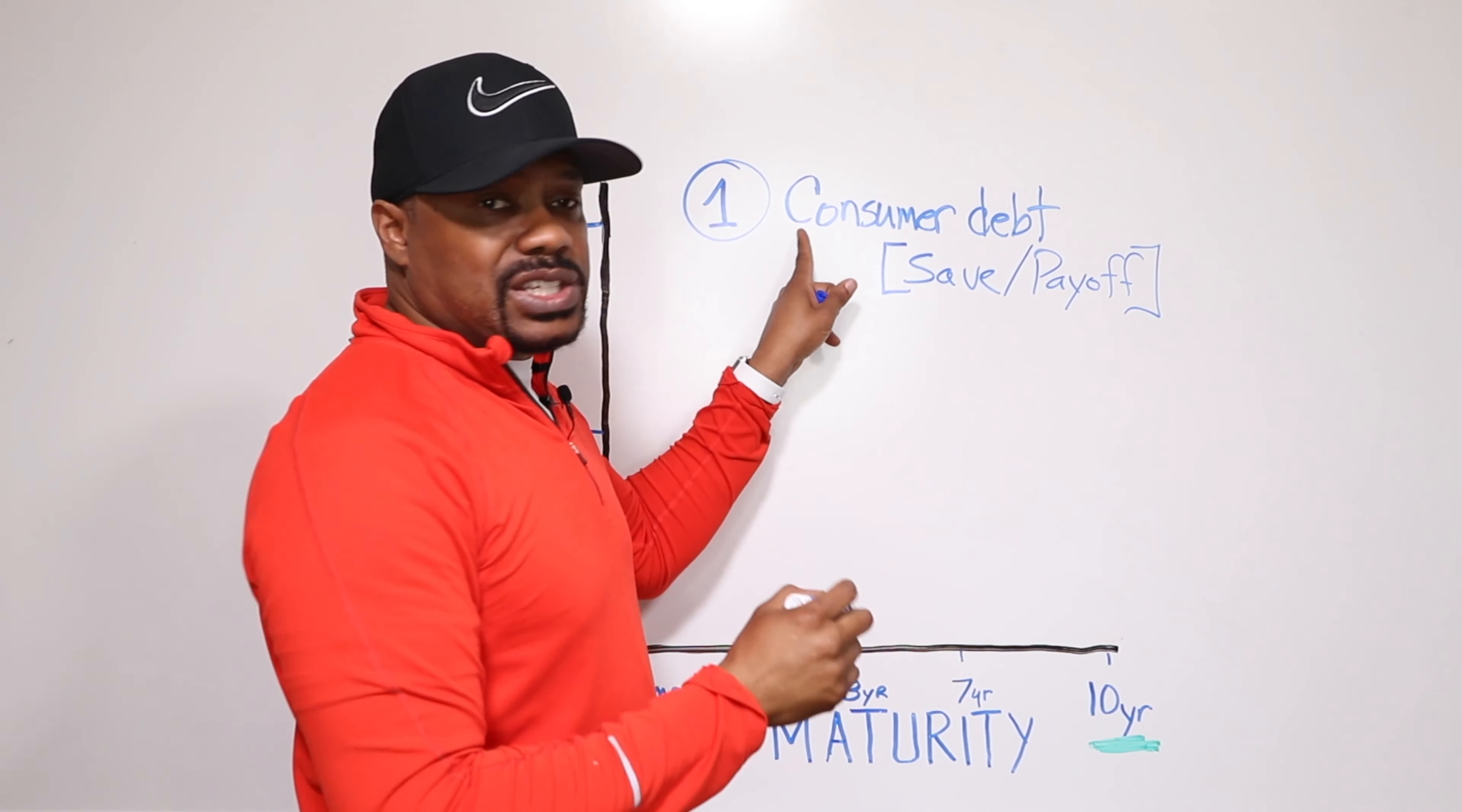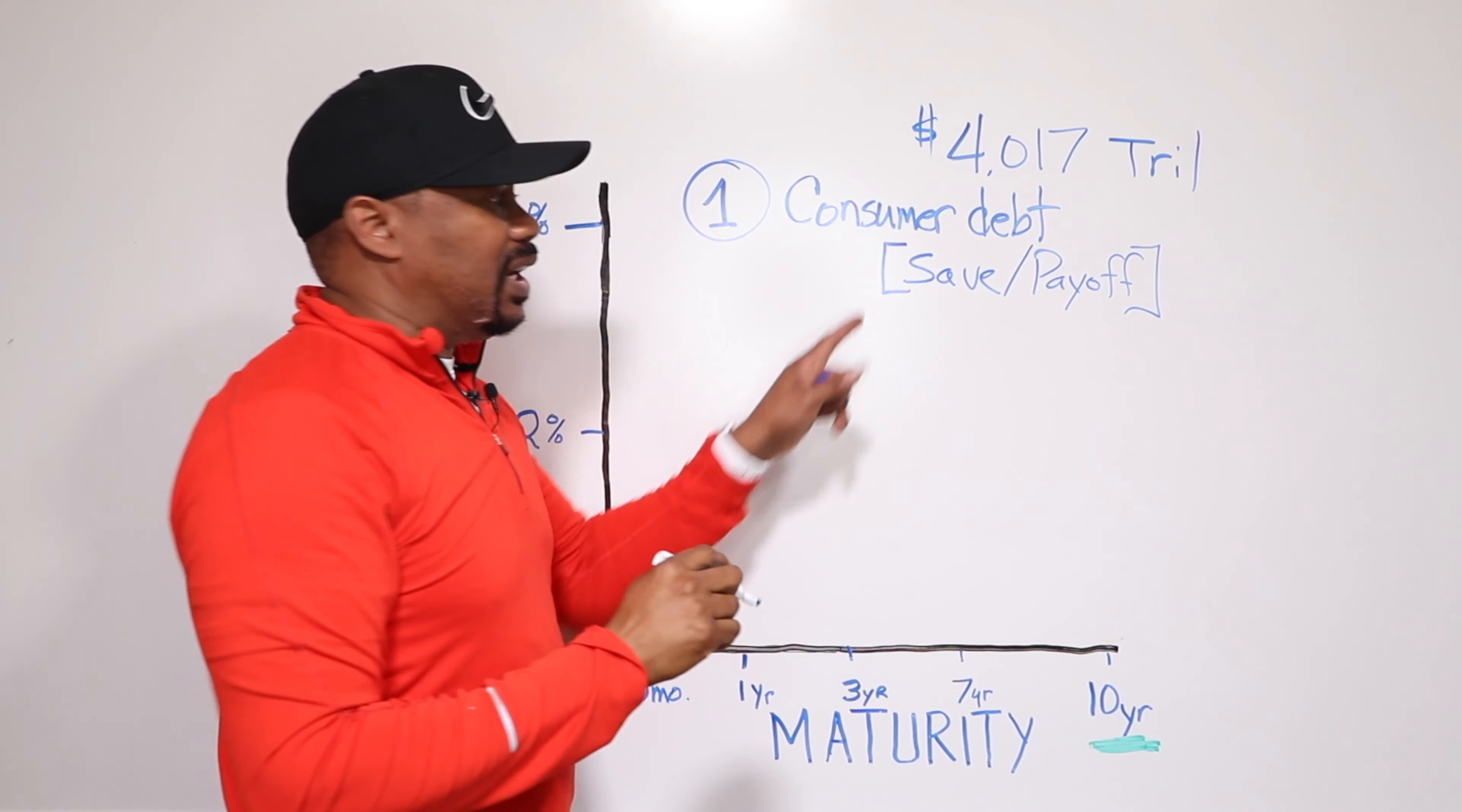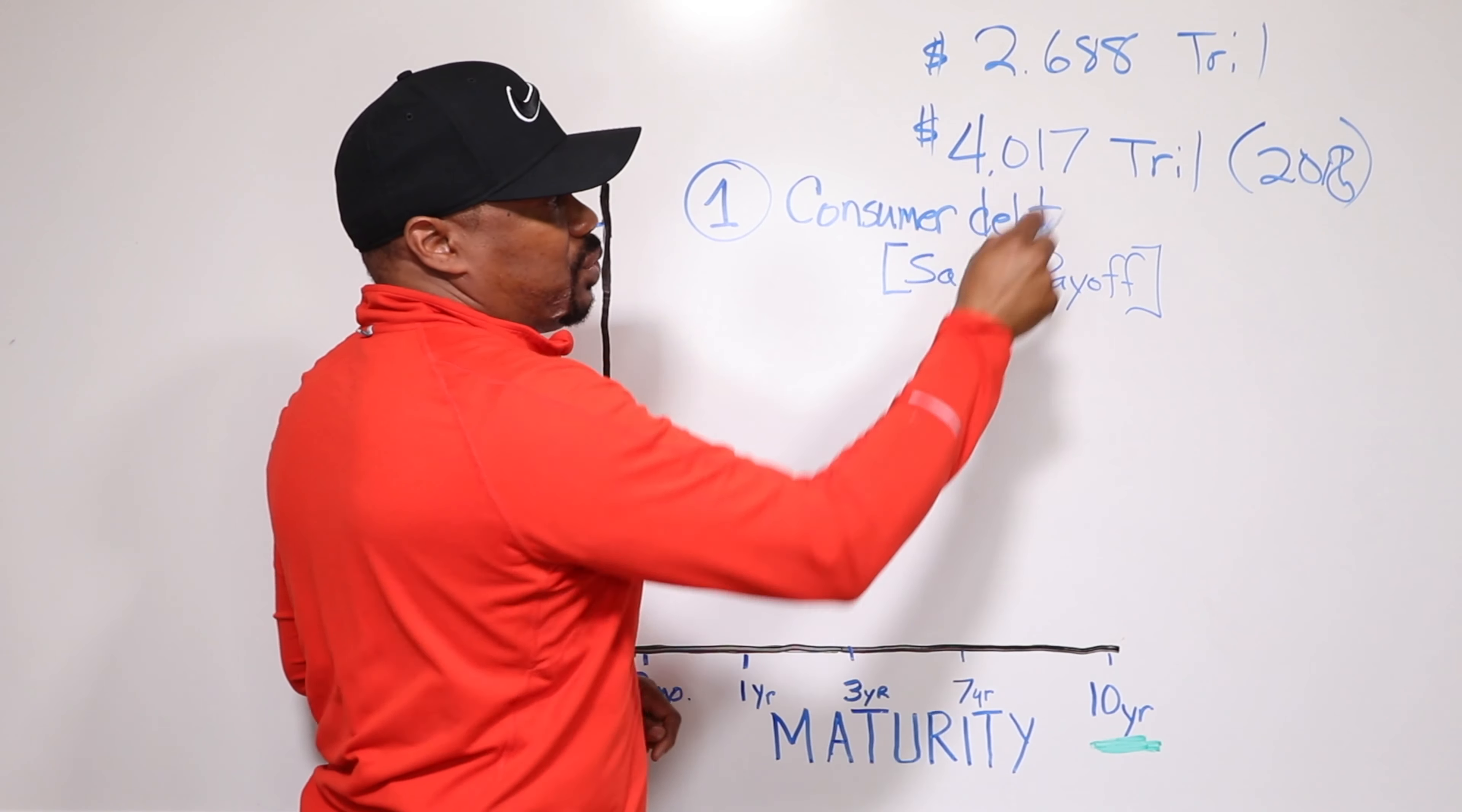So this back in September, if you go back and you look this up, you'll find out that consumer debt hit its highest peak. It peaked over what happened prior to 2008. So consumer debt is $4,017,000,000,000. That's where it ended 2018. And then, just to give you an idea, pre-2008, it was $2,688,000,000,000.